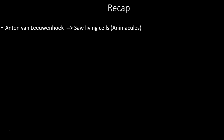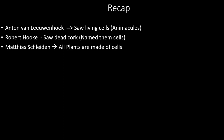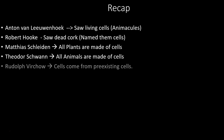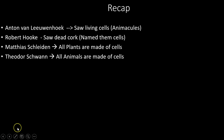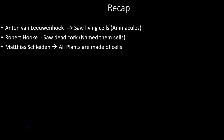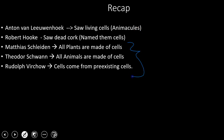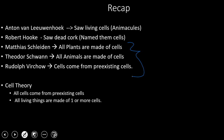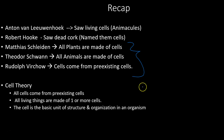So first we have Anton von Leeuwenhoek — the first to see living cells, and he named them animalcules. Next, Robert Hooke saw dead cork cells and named them 'cells' because it reminded him of the rooms that monks lived in. Matthias Schleiden concluded all plants are made up of cells. Theodore Schwann concluded all animals are made up of cells. And Rudolf Virchow concluded cells come from preexisting cells. These three gentlemen helped form the cell theory, which states: all cells come from preexisting cells, all living things are made up of one or more cells, and the cell is the basic unit of structure and organization in an organism. That is it for today, folks — catch you all next time. Adios.